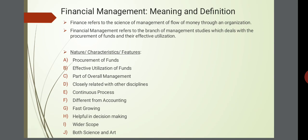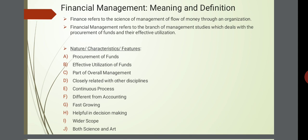Financial management — definition and meaning. Financial management refers to the science of management of flow of money through an organization. It is a branch of management studies which deals with the procurement of funds and their effective utilization. So three things are very important: it is a branch of management studies, it deals with the procurement of funds, and it deals with the effective utilization of the funds.